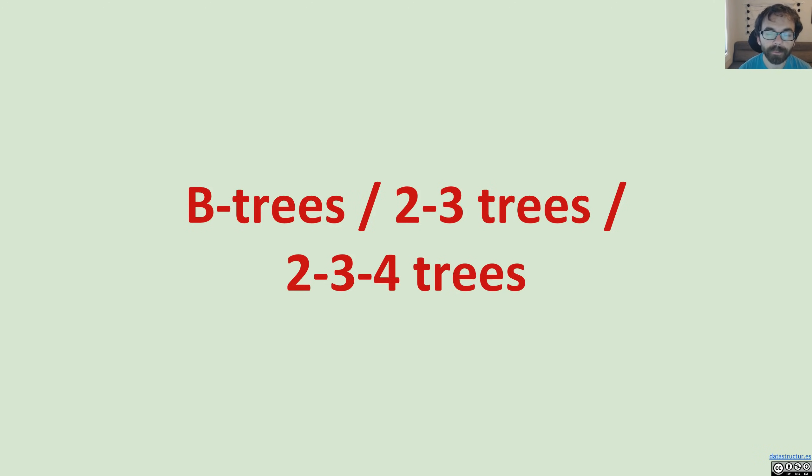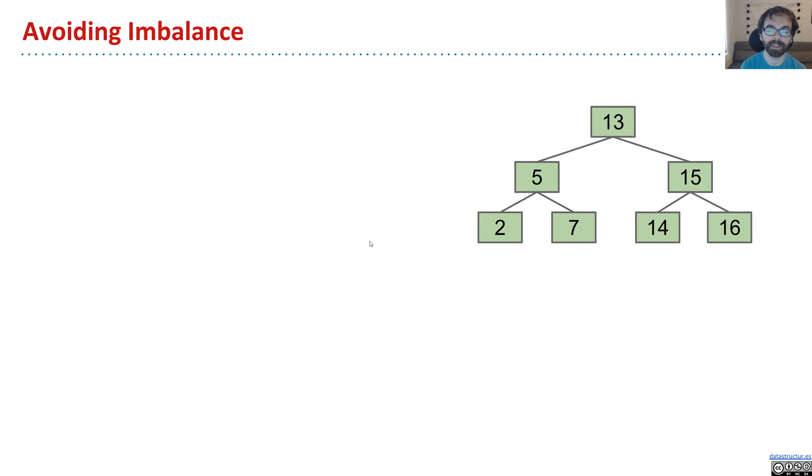What we're going to do next is we're going to invent a very close cousin to the binary search tree called a B-tree that will avoid all the problems of potentially becoming spindly.